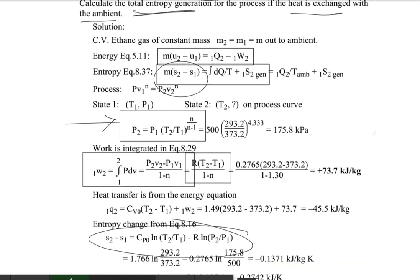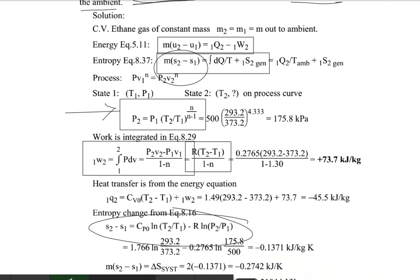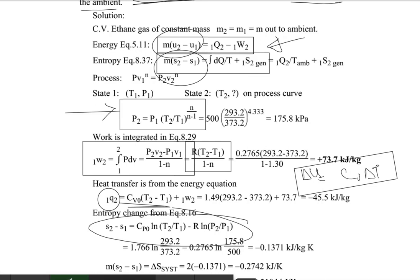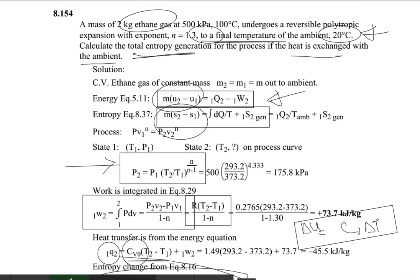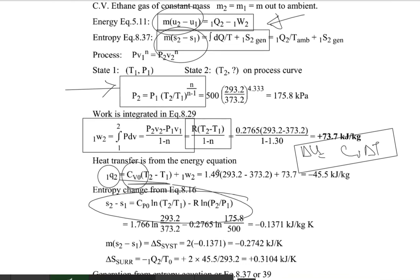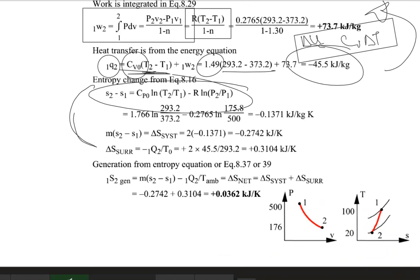From the first law: Q from 1 to 2 equals change in internal energy plus work done. For an ideal gas, change in internal energy equals C_v · ΔT. For ethane, C_v = 1.49 kJ/(kg·K). Make sure temperatures are in absolute scale (Kelvin), not Celsius. Calculate the work done from the polytropic formula, and then find the heat transfer.